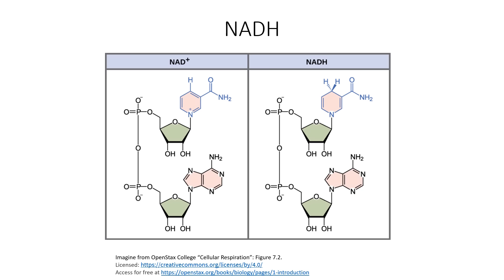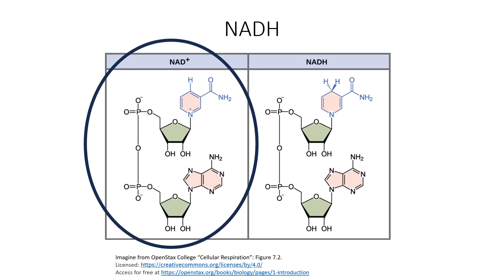One of the most important molecules to understand is nicotinamide adenine dinucleotide, also known as NAD+. NAD+ is a coenzyme involved in different steps of glycolysis, beta-oxidation, and the Krebs cycle.